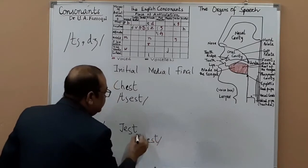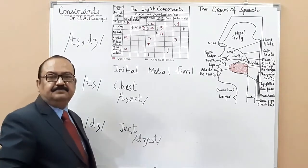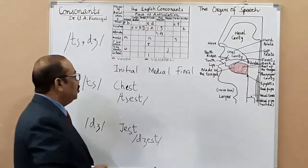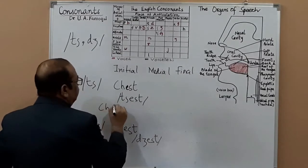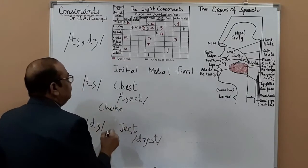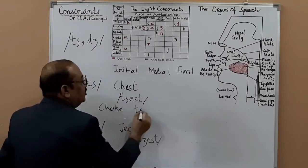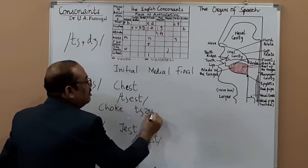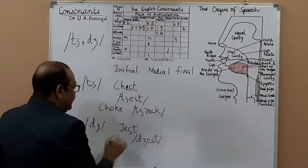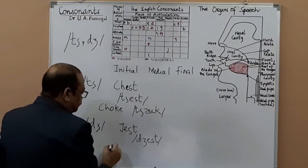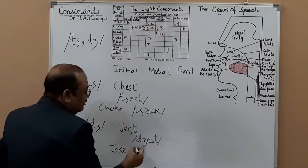For initial position: 'chest' and 'just'. Another word is 'joke' — you write CH and then the diphthong, so this is 'choke'. And then you have 'joke' — this rhymes with it.